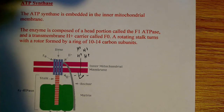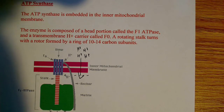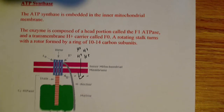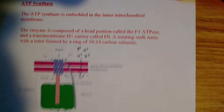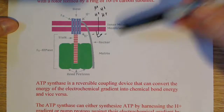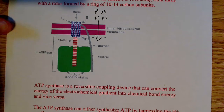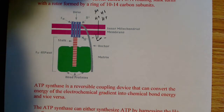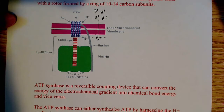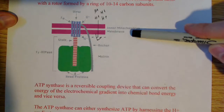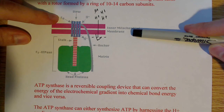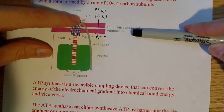The enzyme is composed of a head portion called the F1 ATPase, and a transmembrane proton carrier called the F0. This is a simple diagram of what this looks like. Here's the F0 portion — that's the portion embedded in the inner mitochondrial membrane, and it acts as a proton carrier.